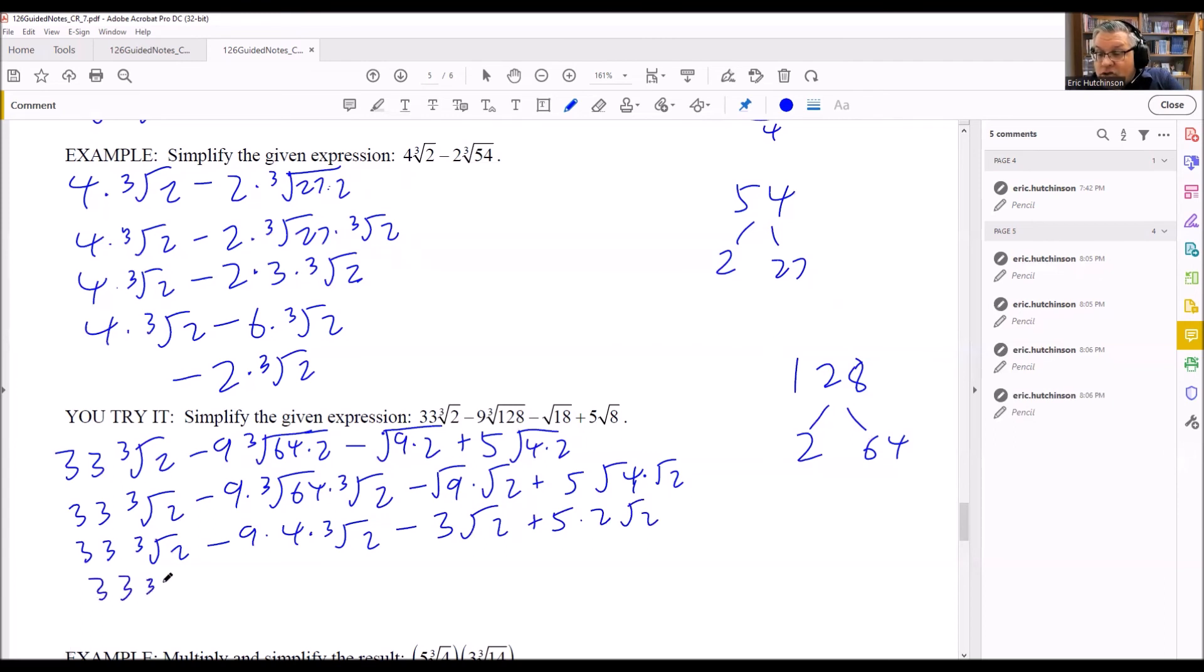Now we'll multiply those together. 9 times 4 is 36 cube root of 2. I have this one, can't do anything with. I have 5 times 2, which is going to be 10. So I get 10 square root of 2.